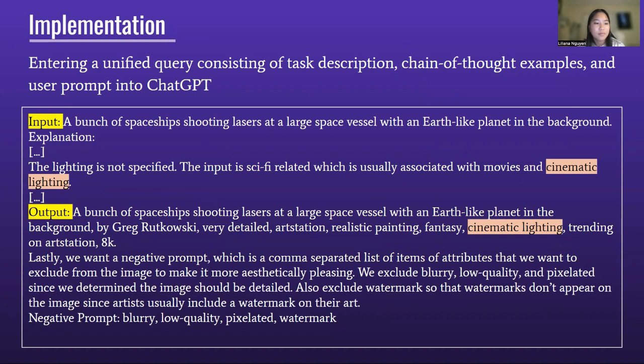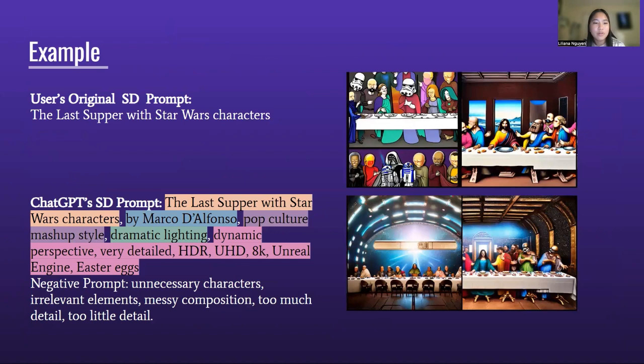On the next slide, you can see the example we used to show the effects of teaching ChatGPT the prompt engineering task. We can see the original prompt, which is 'the last supper with Star Wars characters,' which may be seen as an obscure prompt that's difficult to be understood by Stable Diffusion.